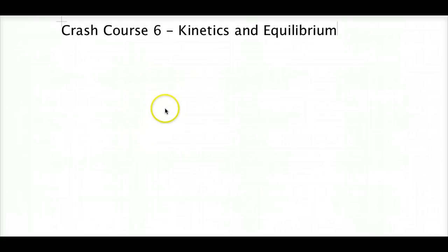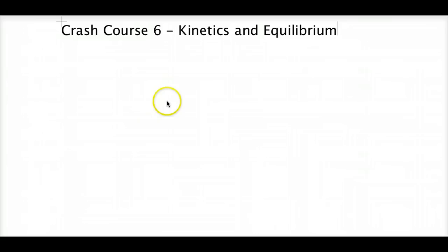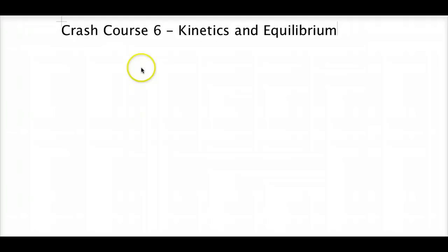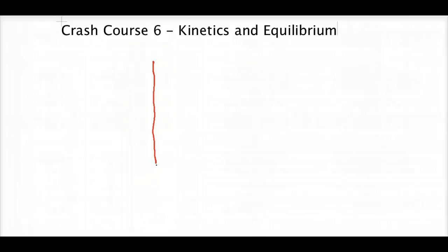This is the sixth installment of the Crash Course Series in Regents Chemistry for the Kinetics and Equilibrium chapter. We're going to start with potential energy curves and all the implications this understanding has, including Table I and other concepts. Let's start with the potential energy curve, and it's very important that we know its parts and can apply it in reactions.